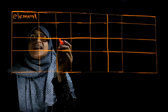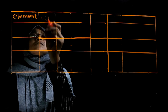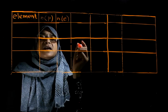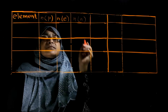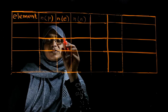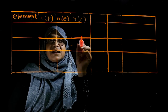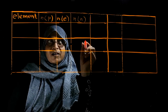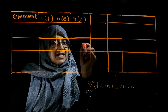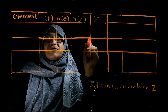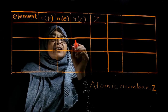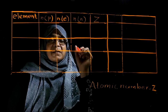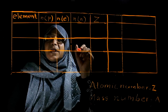For each element, we look at the number of protons, number of electrons, and number of neutrons. If we know the number of protons, we can determine the atomic number, marked by symbol Z. If we know the number of protons and neutrons, we can calculate the mass number, marked by symbol capital A.